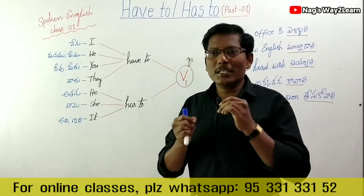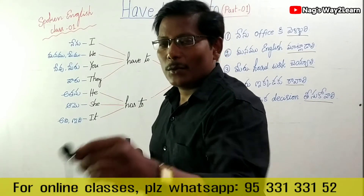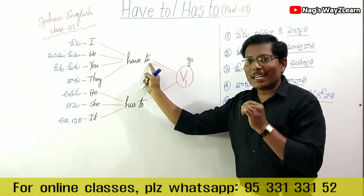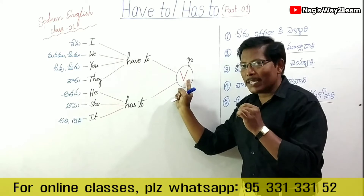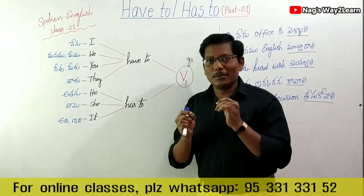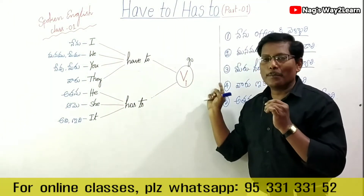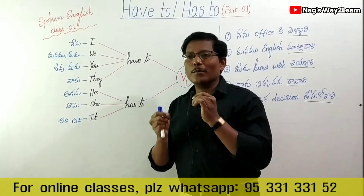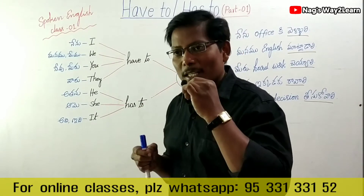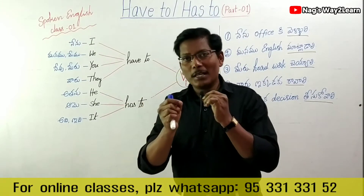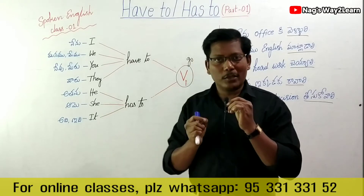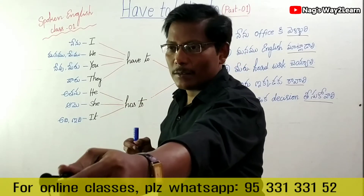I have to meet my friends. Say once again: I have to meet my friends. Once again: I have to meet my friends. Friends, you can also practice speaking. Because practice is important. Very good.